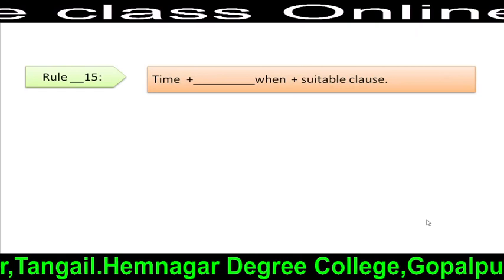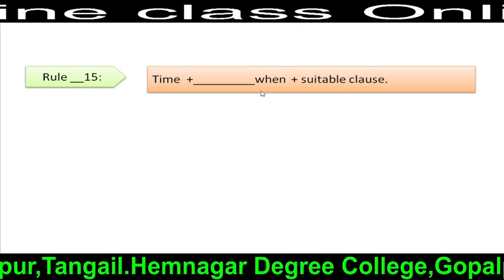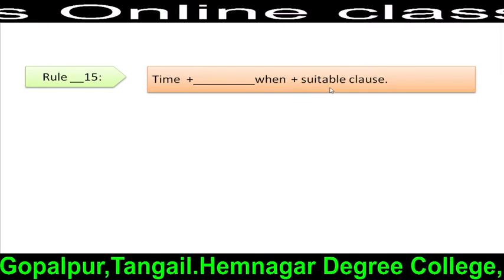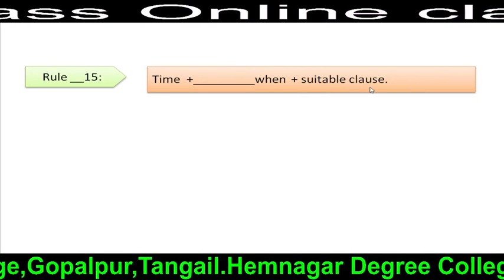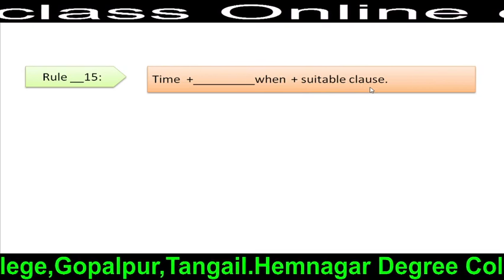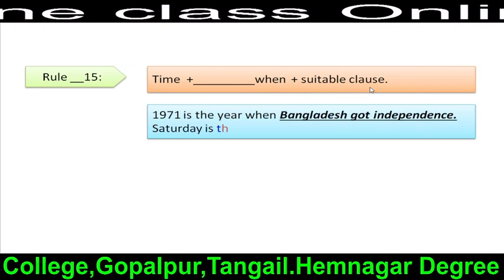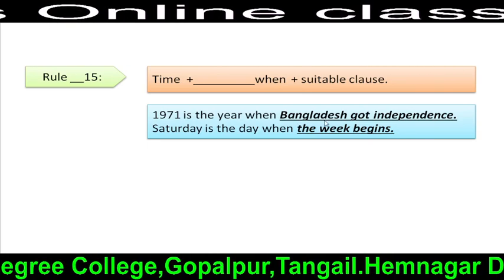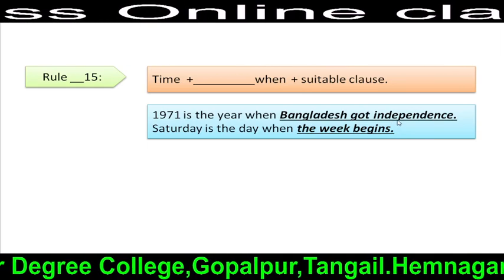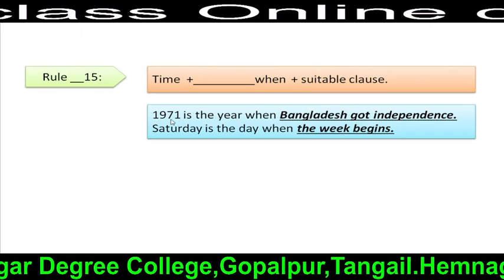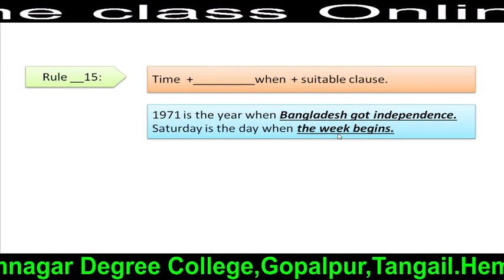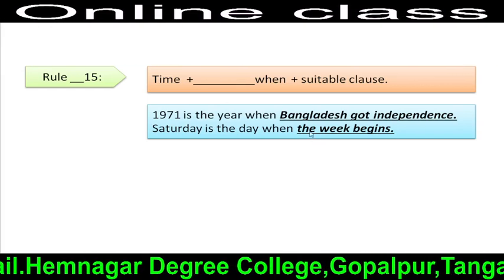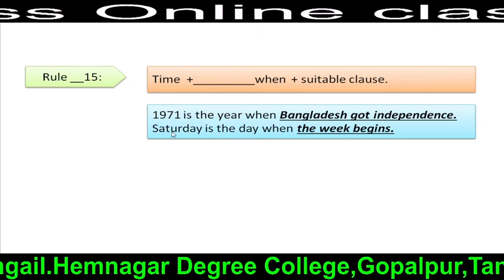Rule 15: Time + extension + when + suitable clause. That means, after 'when', we have to use a suitable clause related to time to complete the sentence meaningfully. For example: '1971 is the year when Bangladesh got independence.' Here, 'Bangladesh got independence' is the suitable clause related to the time. 'Saturday is the day when the week begins.' Here, 'the week begins' is related to the time Saturday.